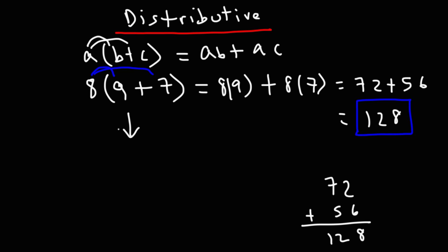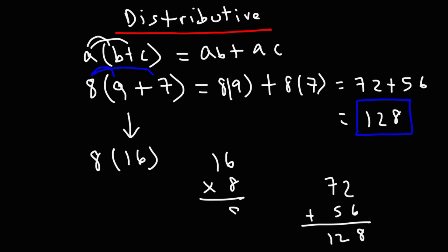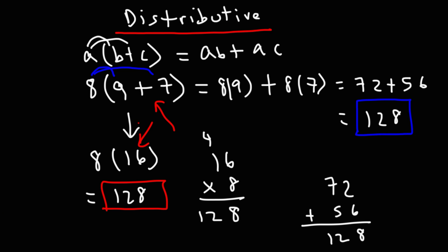Now let's do it the other way: add 9 and 7 first — 9 plus 7 is 16 — and then compute 8 times 16. If you don't know that off the top of your head, the first method is going to be a lot faster because you'd need a calculator or long multiplication. 8 times 6 is 48 — write the 8, carry the 4. Then 8 times 1 is 8, plus 4 is 12. So we get the same answer: 128. This is a case where the distributive property is easier. If you get a big number, it's better to break it into smaller parts.